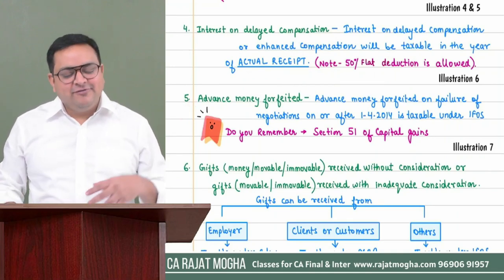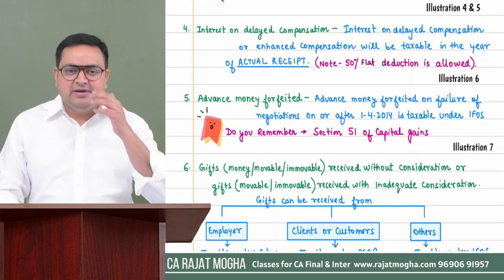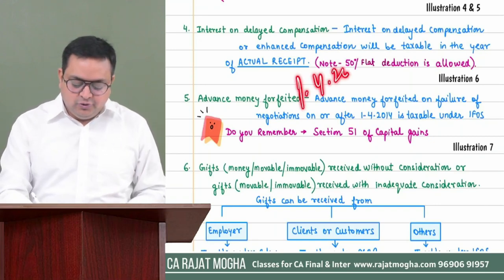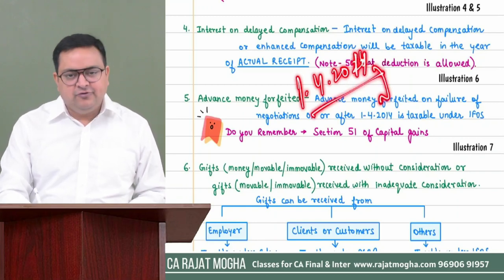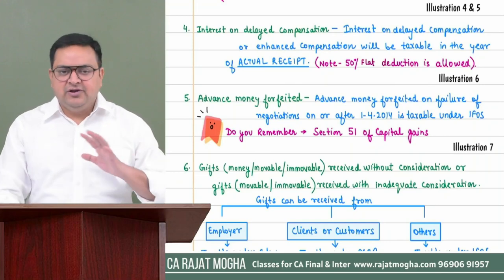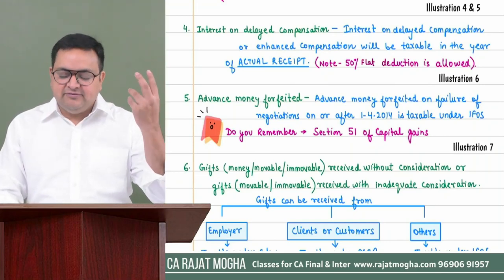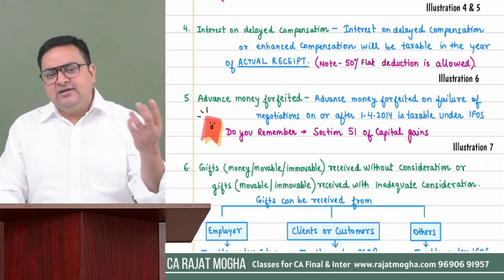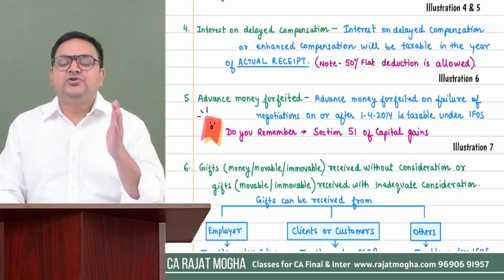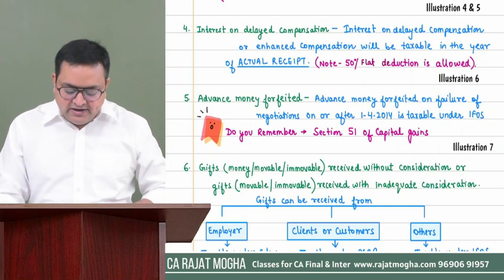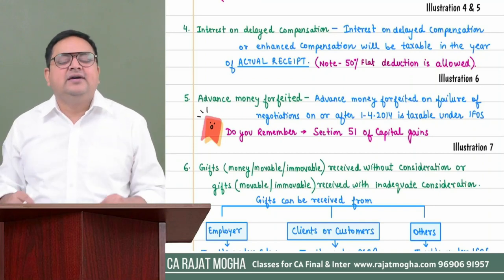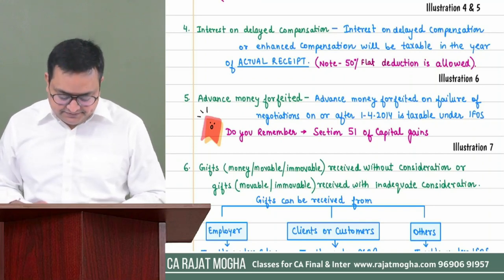Fifth is advance money forfeited. We covered this in capital gain under Section 51. If advance money was forfeited on or after 1st April 2014, it becomes IFOS income in the very year of forfeiture. But if forfeited before that date — up to 31st March 2014 — it is not IFOS income; instead it is reduced from the cost when that asset is eventually sold.